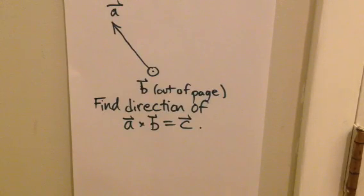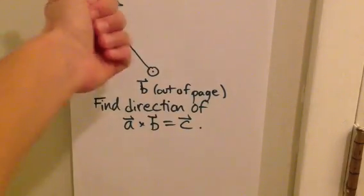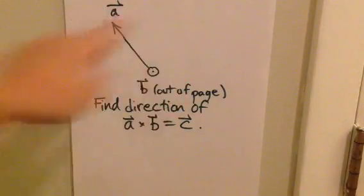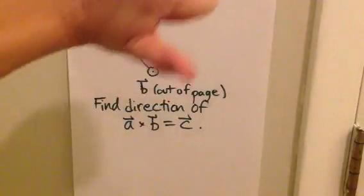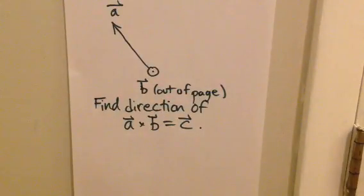One more example of using the right-hand rule to find the direction of the cross product of two vectors. In this case, we have vector A pointing in the plane of the page this way, but B, instead of being in the plane of the page, is pointing out of the page. We want to find the direction of A cross B.